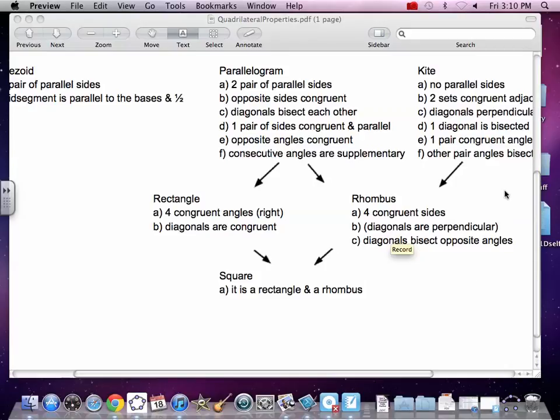This time we're going to talk about a rhombus. We are over here. A rhombus has four congruent sides.